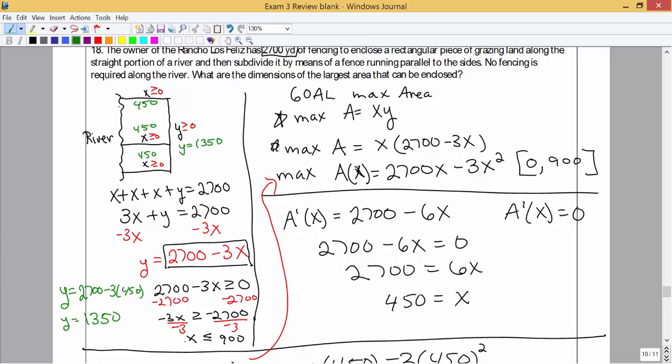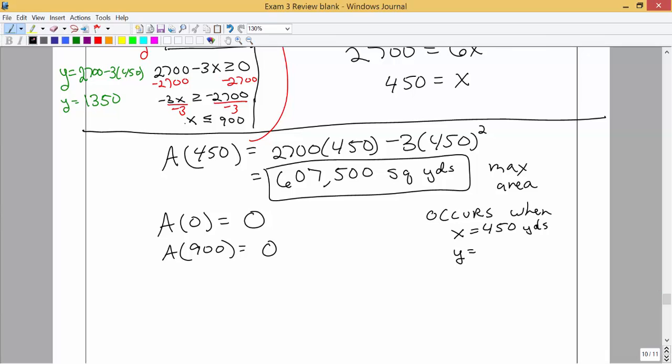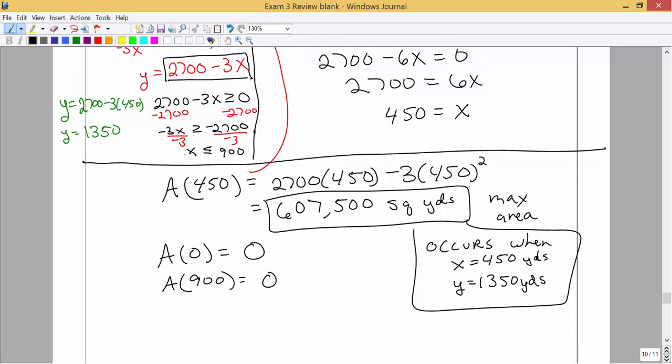So the dimensions here: the width would have to be 450, and the length of that fence would have to be 1350. So 1350 yards. Okay, those are the dimensions of the fence that we need.